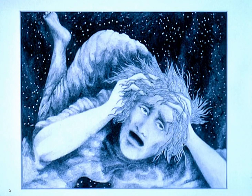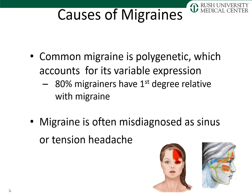This picture was drawn by a migraine sufferer and illustrates the desperation patients feel during a migraine. The cause of migraine appears to be polygenetic, which accounts for its variable expression in people and within families. Approximately 80% of migrainers have a first-degree relative with migraine. Migraine is often misdiagnosed as sinus or tension headache, and the sinus pain distribution can also be seen in other headache disorders.